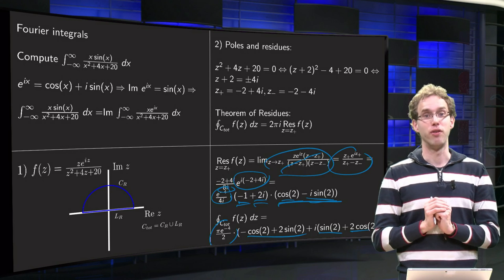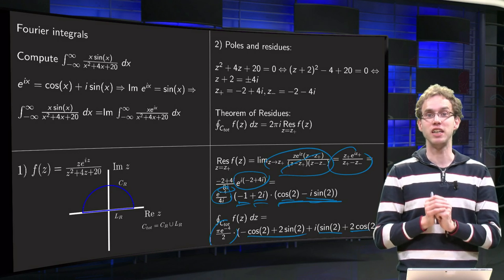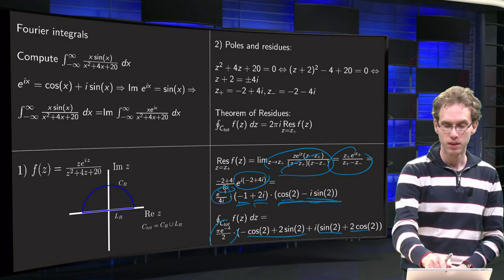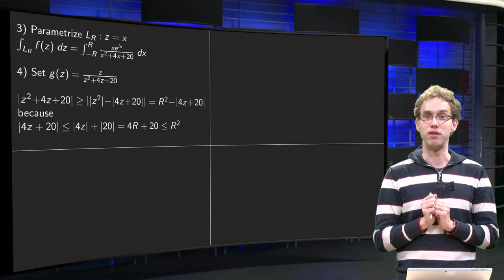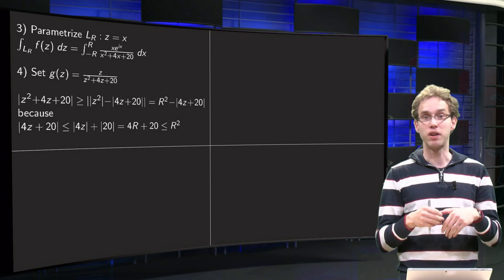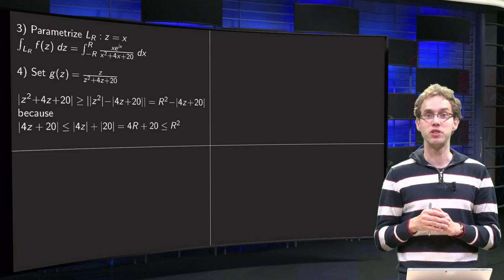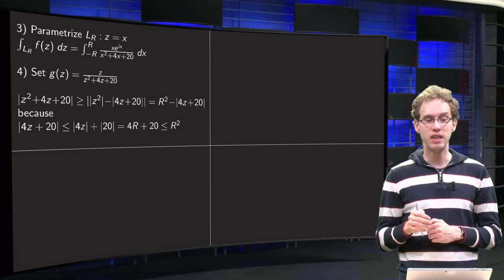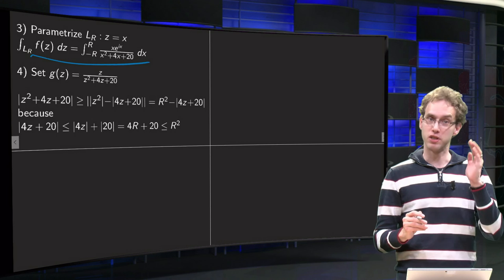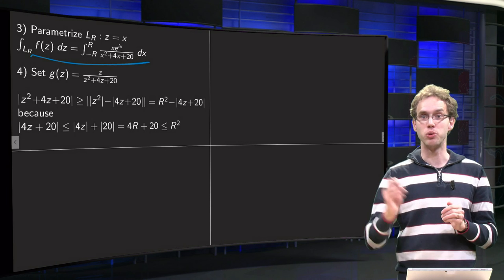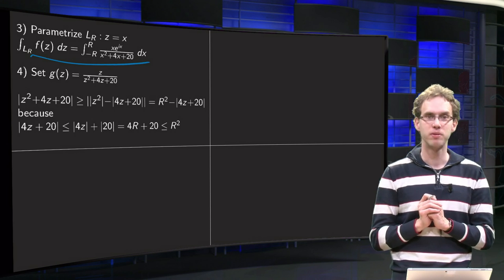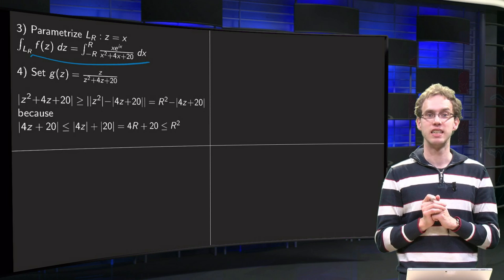Step 3: parametrize wherever necessary. This step is very fast: on the real axis we simply take z = x, so dz = dx, and the integral along L_R becomes just the integral from −R to R of f(x) dx — the one we want.